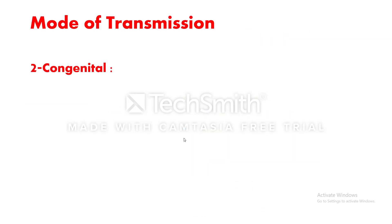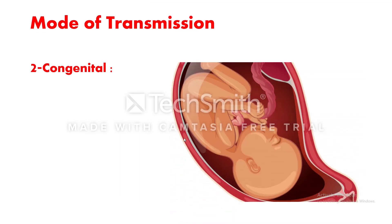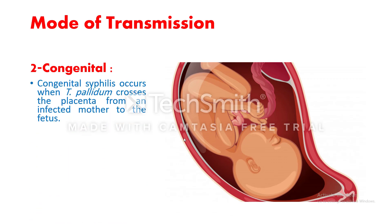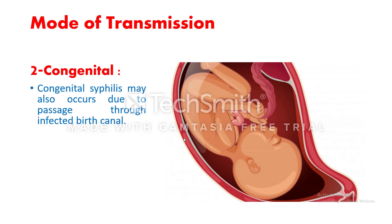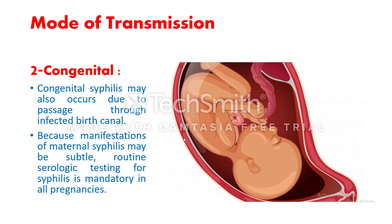Another mode of transmission is congenital, where infection passes from an infected mother through the placenta to the fetus. Maternal transmission most frequently occurs during primary or secondary syphilis when spirochetes are most numerous, but congenital transmission can also occur during passage of the fetus through an infected birth canal. Because manifestations of maternal syphilis are often subtle, routine serologic testing for syphilis is mandatory in all pregnancies.